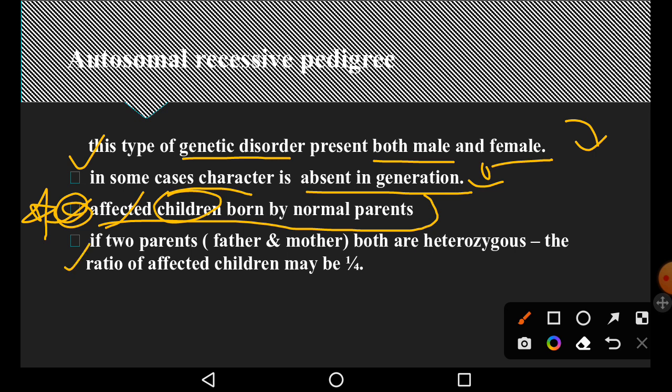The fourth point is that if two parents, father and mother, both are heterozygous, the ratio of the affected children may be 1 to 4.